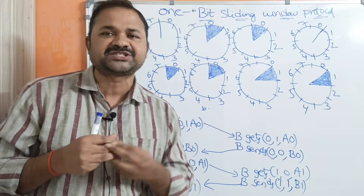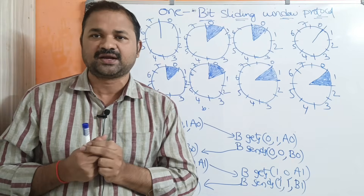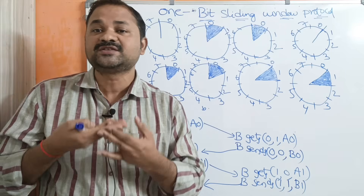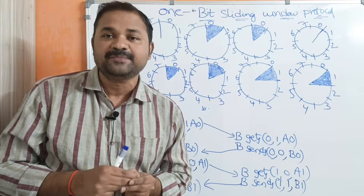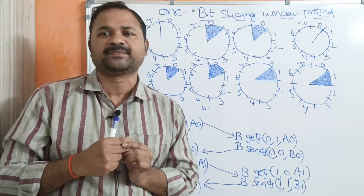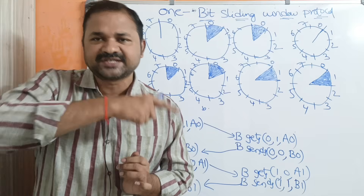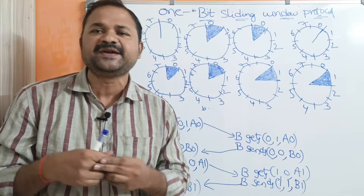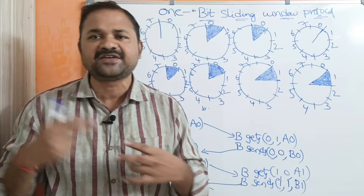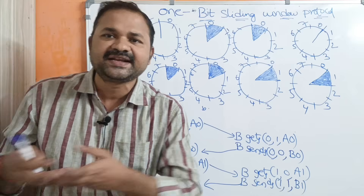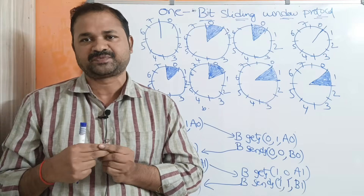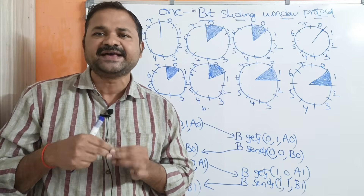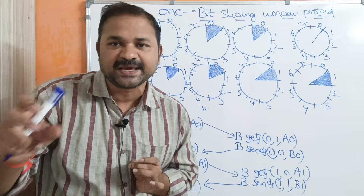We can say that the 1-bit sliding window protocol is similar to the stop-and-wait protocol. In stop-and-wait protocol, at a time the sender can send only one frame and the receiver can receive only one frame. The receiver provides acknowledgement to the sender, and after that the sender can send another frame. So 1-bit sliding window protocol and stop-and-wait protocol are the same.